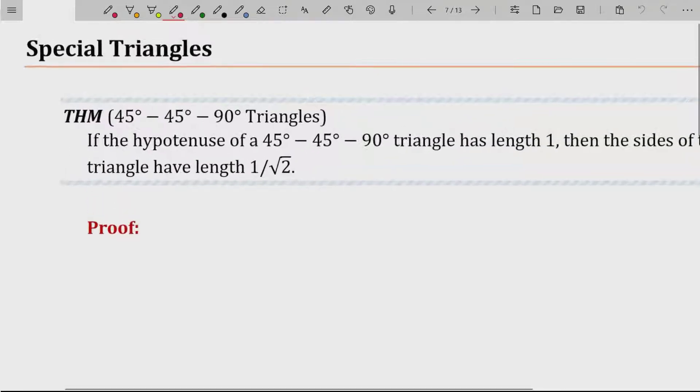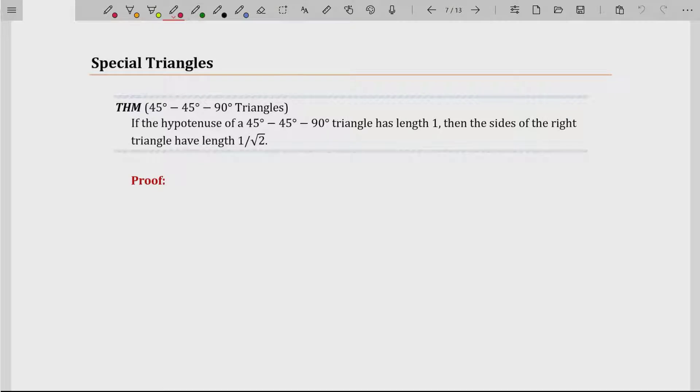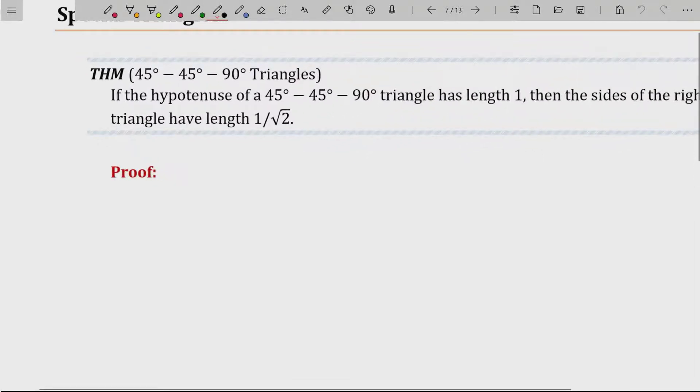So here's a theorem. If the hypotenuse of a 45-45-90 degree triangle has length 1, then the sides of the right triangle have length 1 over root 2. Well, the proof is pretty easy here. You just draw a 45-45-90 triangle, just like this. So this is 45 degrees, right triangle, 45 degrees. From geometry, we know if two angles are equal in a triangle, their opposite sides must also be equal. So I'm just going to call this side unknown, but this is the same unknown. And we were told the hypotenuse, the side opposite the right angle, is of length 1.